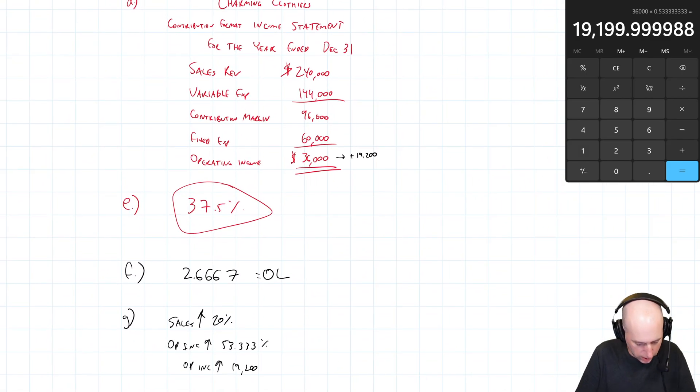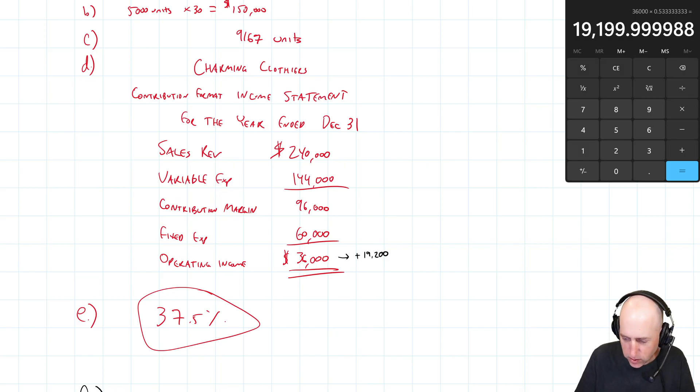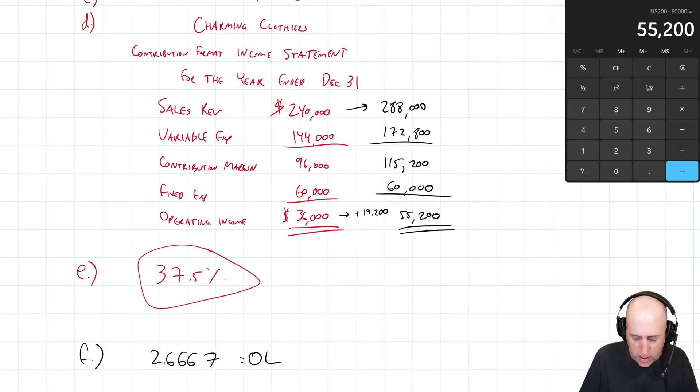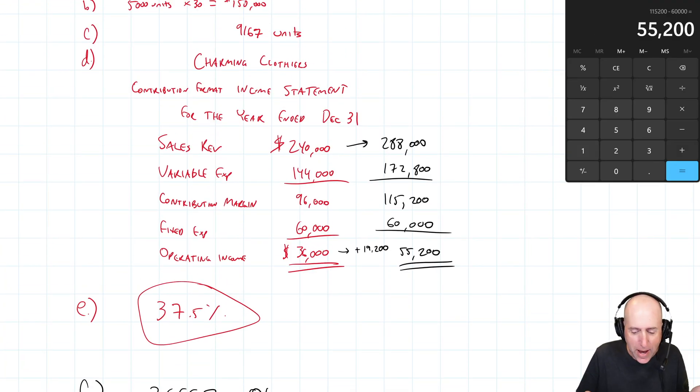But let's just kind of prove it. Let's say sales do go up by 20%. What are our new sales? If sales go up by 20%, they were 240 times 1.2. They're going to be 288. If sales go up by 20%, variable expenses also go up by 20%. So times 1.2, 172,800. 288 minus 172,800 gives us our new contribution margin 115,200 and our fixed expenses remain 60. So 115 minus 60 is 55,200, which the math works both ways was an increase of $19,200 and was also an increase of 53.333 repeating percent. So yes, we've solved it.